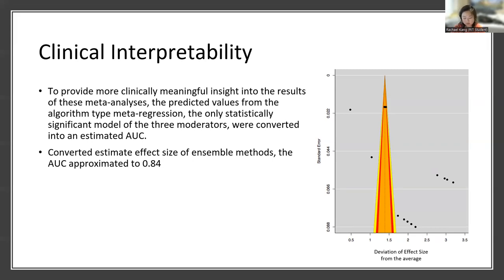As Youngstrom and colleagues described in an article published in 2019, these kinds of AUCs — AUCs that approach and go beyond 0.9 — should be considered a little suspicious. They're almost too good to be true, to take a direct quote from the article. This altogether could indicate that deep learning may not be better at predicting suicide than ensemble methods, or at least not as much better as these results indicated. However, further analysis is warranted to ascertain statements that go beyond what I conducted in this project.